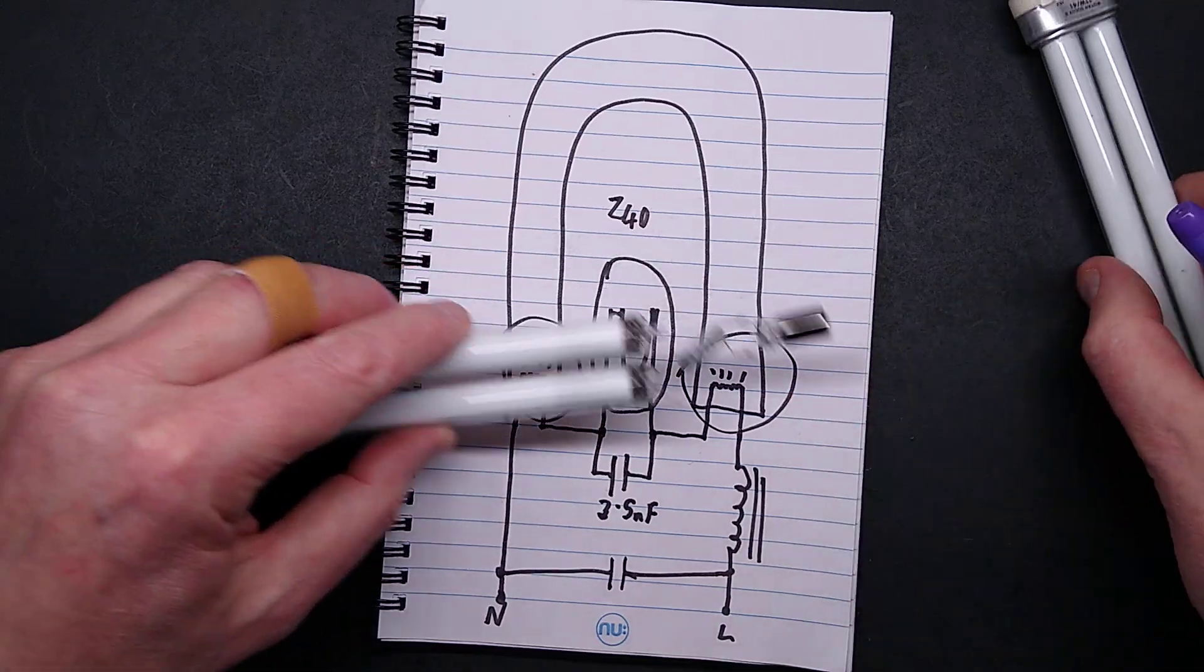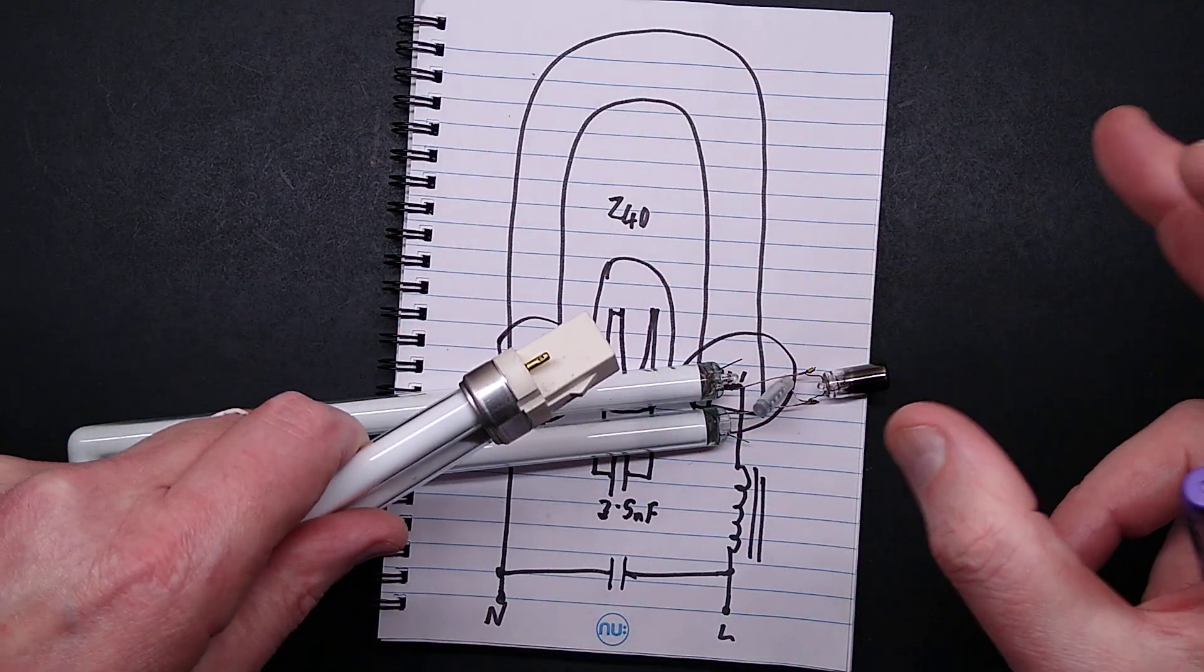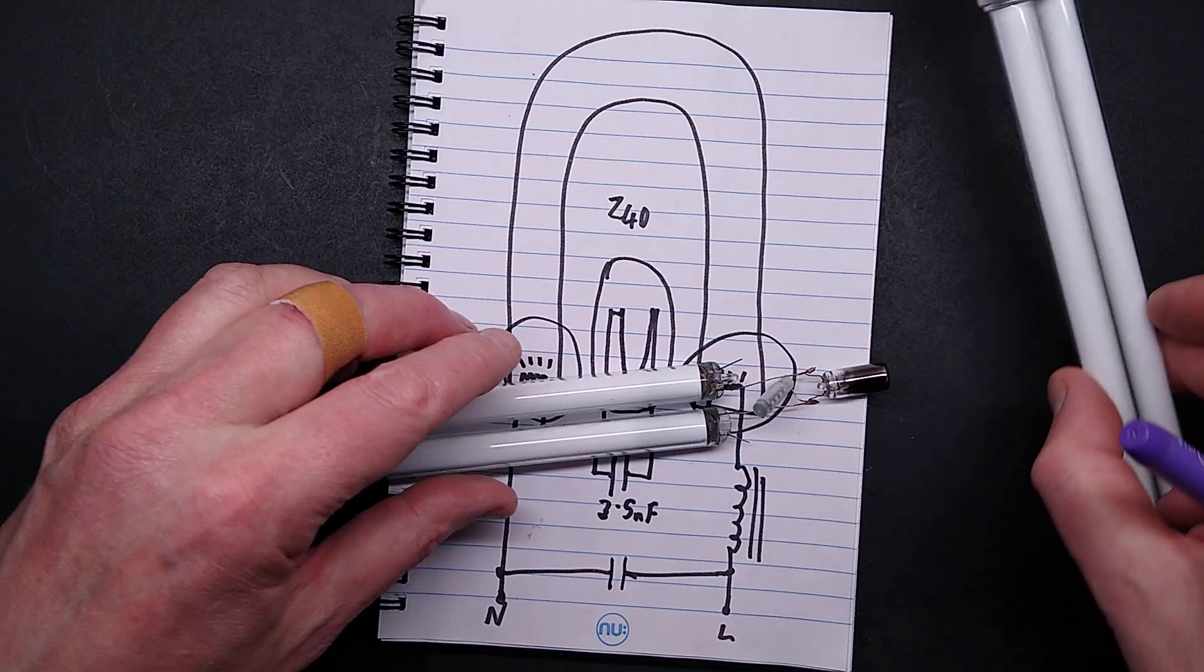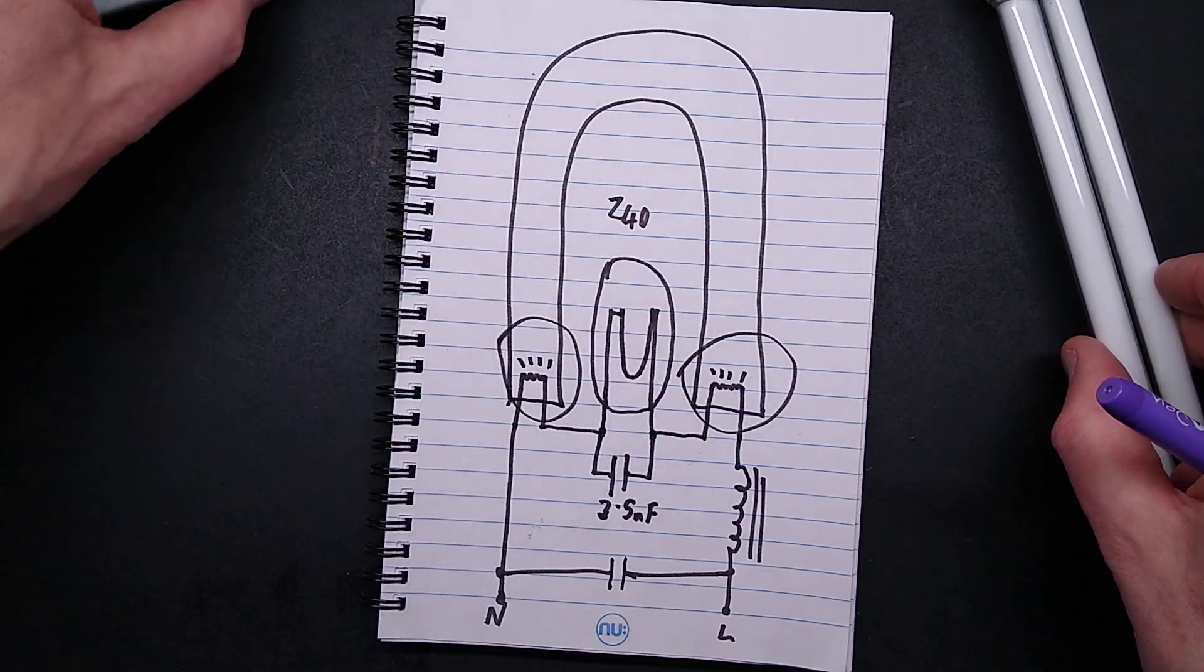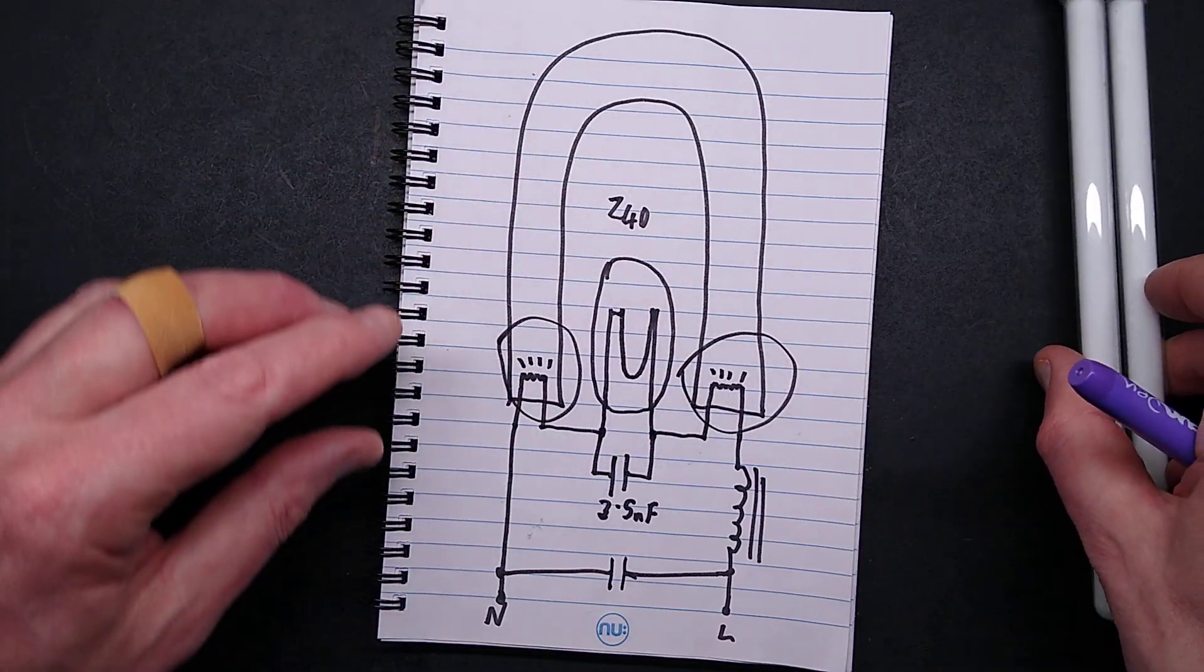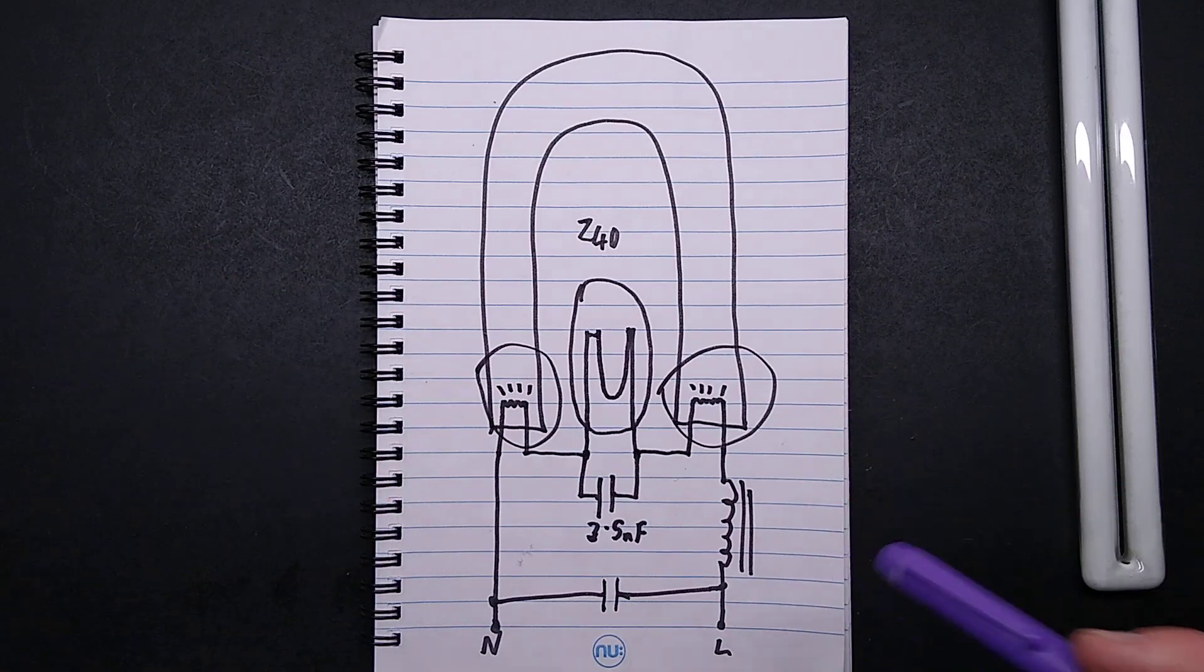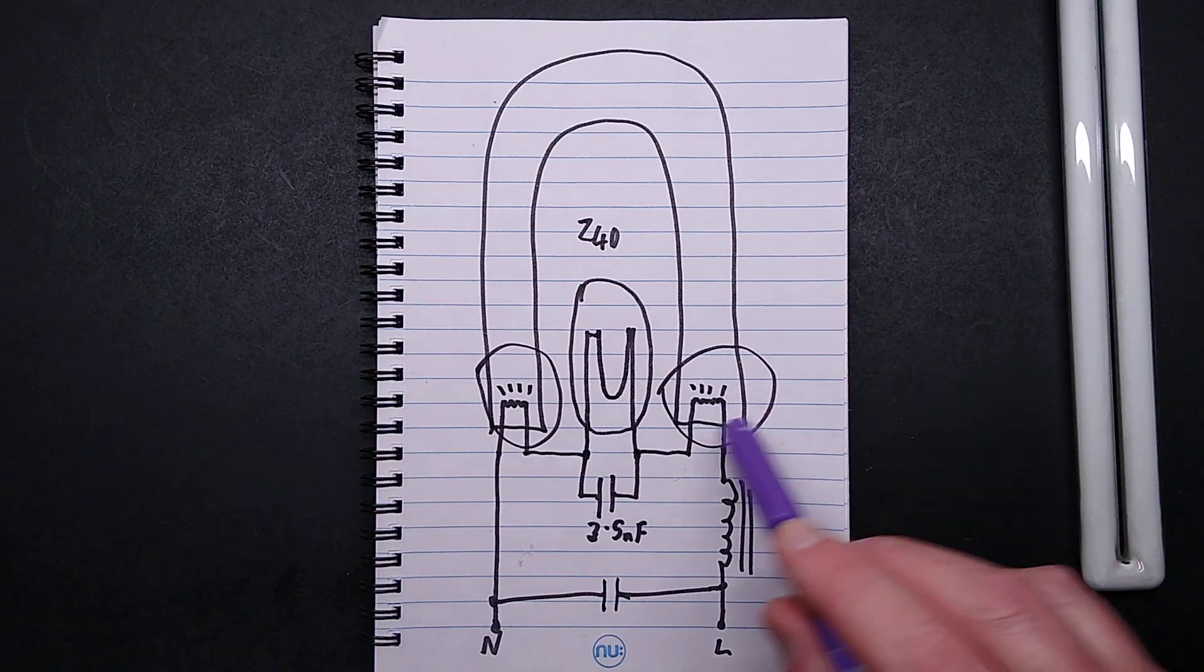Something you can actually do for that is just to basically get the base and ping it like that - just give it a sharp tap. That sometimes gets a bit more life out of it, but at that point in time it's your warning that you're going to need a new tube.